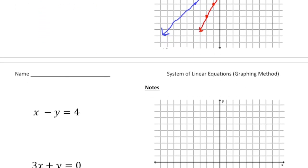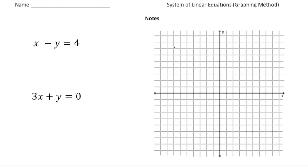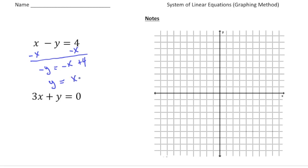Let's try another problem. On the next page we have x minus y equals 4 and 3x plus y equals 0. Neither one of these are written in slope-intercept form, so I'm going to transform the first one. Taking away x from both sides gives negative y equals negative x plus 4, then multiplying each part by negative 1 gives y equals x minus 4. For the second equation, taking away 3x gives y equals negative 3x plus 0, which is just negative 3x.